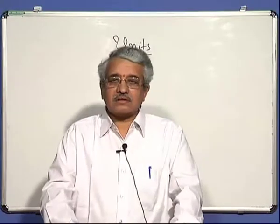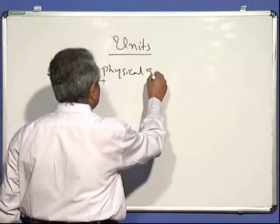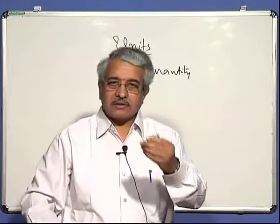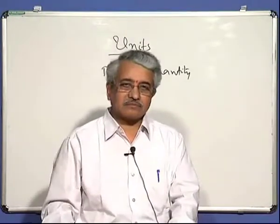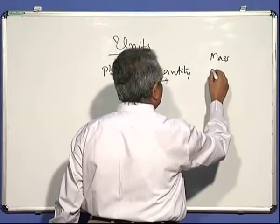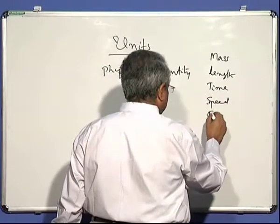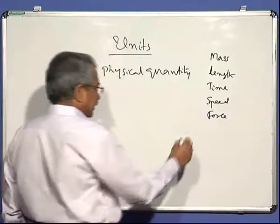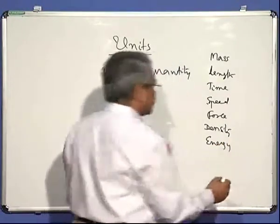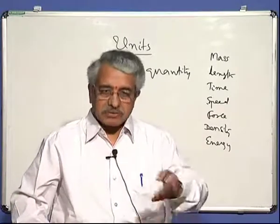The things that require standards are called physical quantities. A physical quantity means anything that can be named as a physical observation and given a definition. For example: mass, length, time, speed, force, density, and energy are all physical quantities. An innumerable number of physical quantities are known today with the advancement of science.